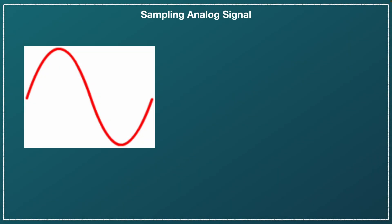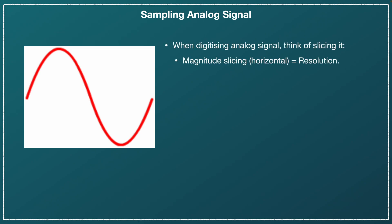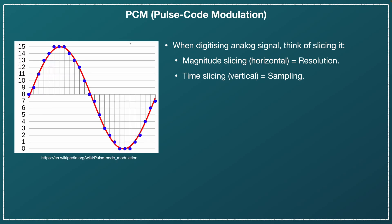We start with an analog signal picked up by a sensor such as a microphone, and we need to digitize this signal. We don't talk about AD conversion too much here, just the concept of digitizing an analog signal. We can think of it as slicing the signal in magnitude and in time. The horizontal lines are the magnitude slicing, the vertical lines are the time slicing, and the blue circles are the sampling points.